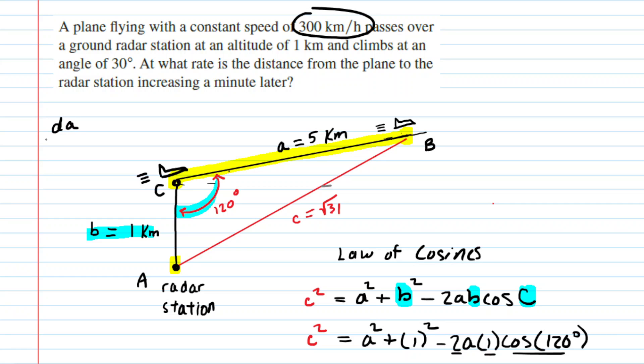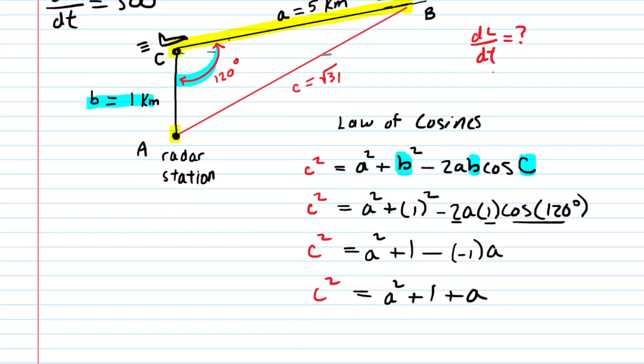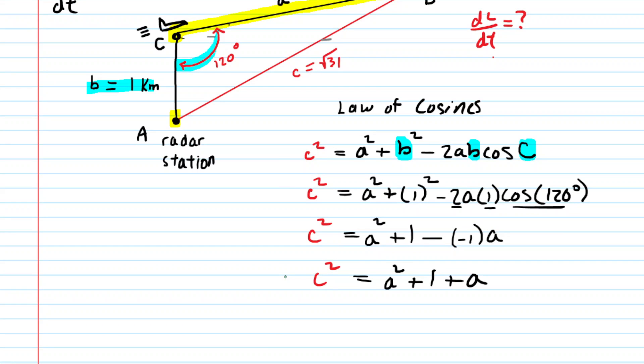So we know that the rate of change of side length a is equal to 300 kilometers per hour. What we're looking for is the rate that the distance from the plane to the radar station is increasing. The distance from the plane to the radar station was c. So we're actually, in this question, looking for dc/dt. We don't know that rate. So keep those ideas in mind. We're looking for dc/dt, but we do know da/dt. And we're going to be utilizing those in just a moment, because what we're going to do next is take this equation and differentiate it with respect to time.